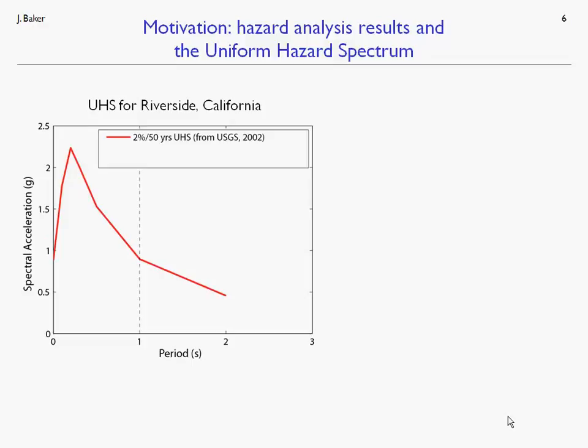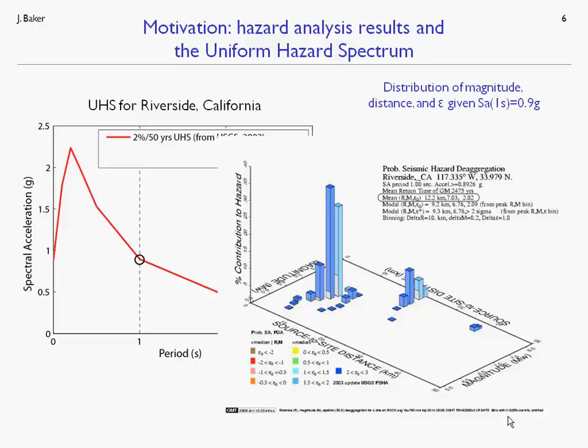Let's look at how the uniform hazard spectrum plays out for a real site. Here I've plotted the uniform hazard spectrum for Riverside, California, from the USGS 2002 maps, showing spectral acceleration amplitudes with 2% probability of exceedance in 50 years for periods between 0 and 2 seconds. For the spectral acceleration at 1 second — about 0.9 g — we can perform de-aggregation provided by the USGS to find the distribution of magnitudes, distances, and epsilon, given that 0.9 g amplitude at 1 second.